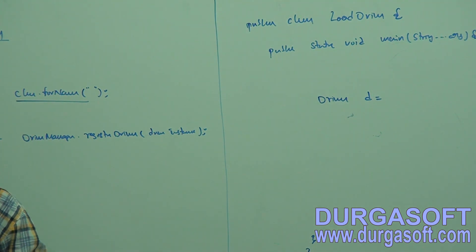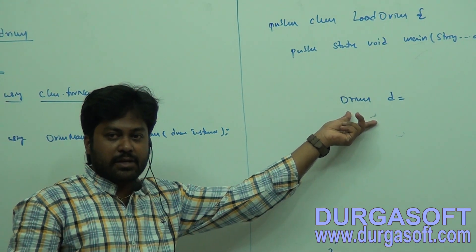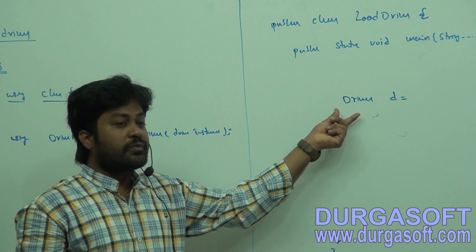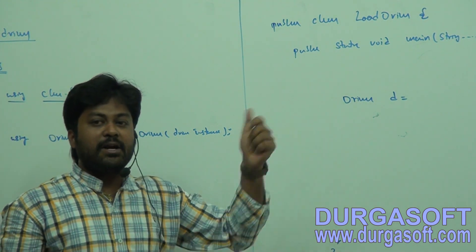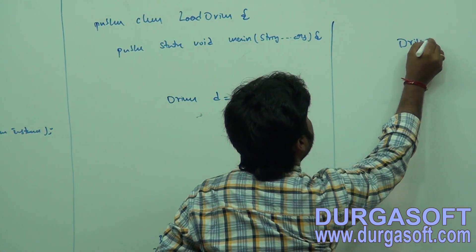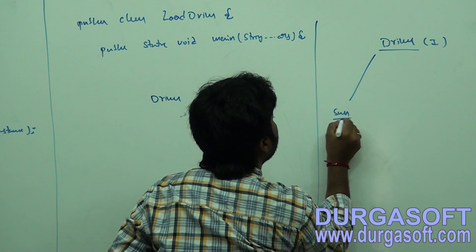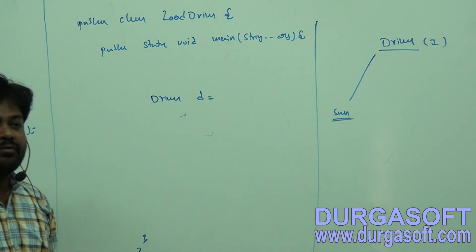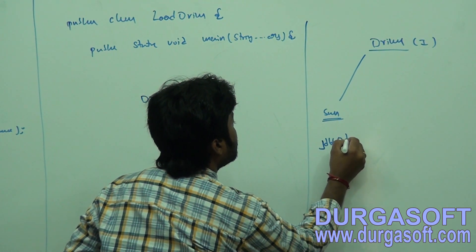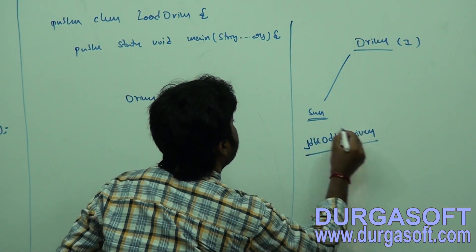Driver is an interface, so we need to create a Driver interface instance. Since it's an interface, we require an implementation. For this Driver interface, Sun provided one implementation whose class name is JdbcOdbcDriver. This class is Sun-given.